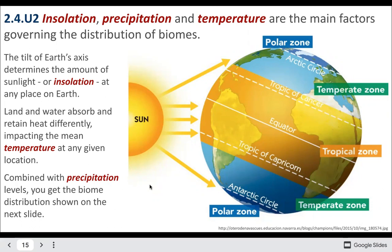Insolation plays a huge role in temperature. Where you have the most direct insolation, you get the warmest temperatures — that's why we have the tropical zone. The areas with the least direct insolation, where the sun's at an angle, are our polar zones, which are the coldest. Temperate is sort of intermediary, with moderate levels of temperature.